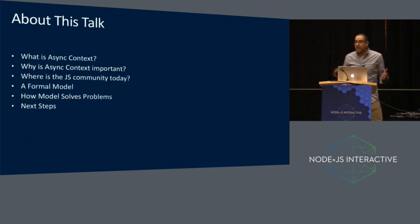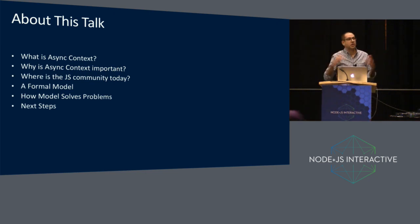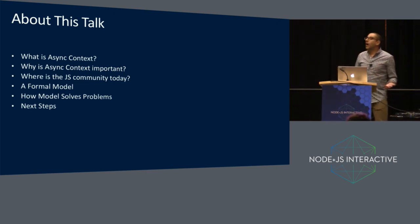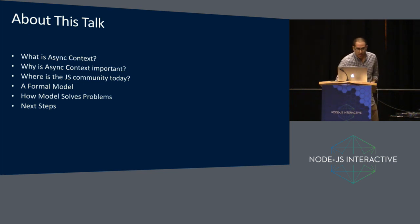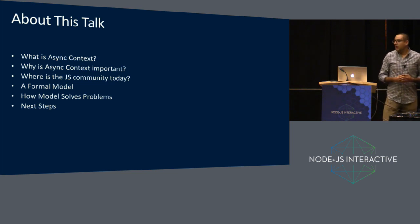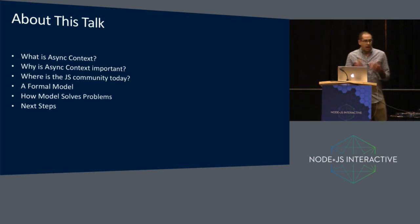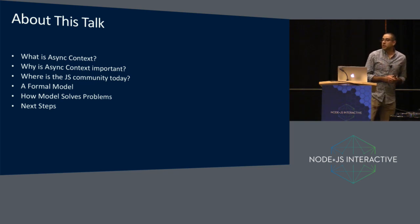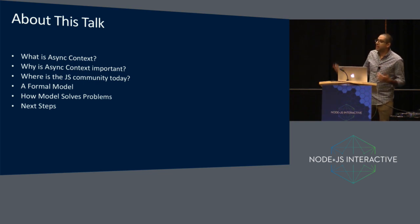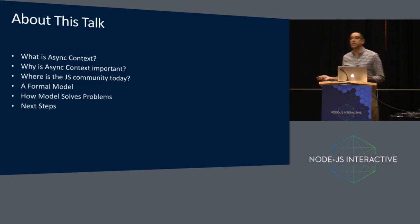Quick agenda: we'll do a definition of what is async context, try and give people some intuition about that, tell you why that's important, talk about some existing solutions to the problem that have been done in the JavaScript community to date, poke some holes in those existing solutions, and then talk about a formalization or a model that we think addresses some of those shortcomings. We'll go through a few problems, how this model can be applied to solve some of these problems, and we'll talk about next steps and how we move this forward.